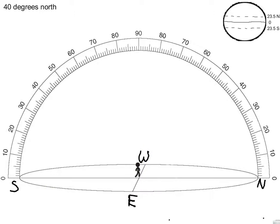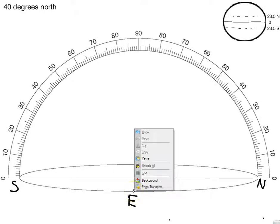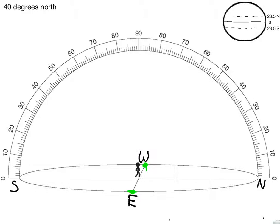We're going to start with an equinox. For every observer on Earth, during an equinox, the sun will rise directly east and set directly west. This is because the equator is getting the most direct sunlight.